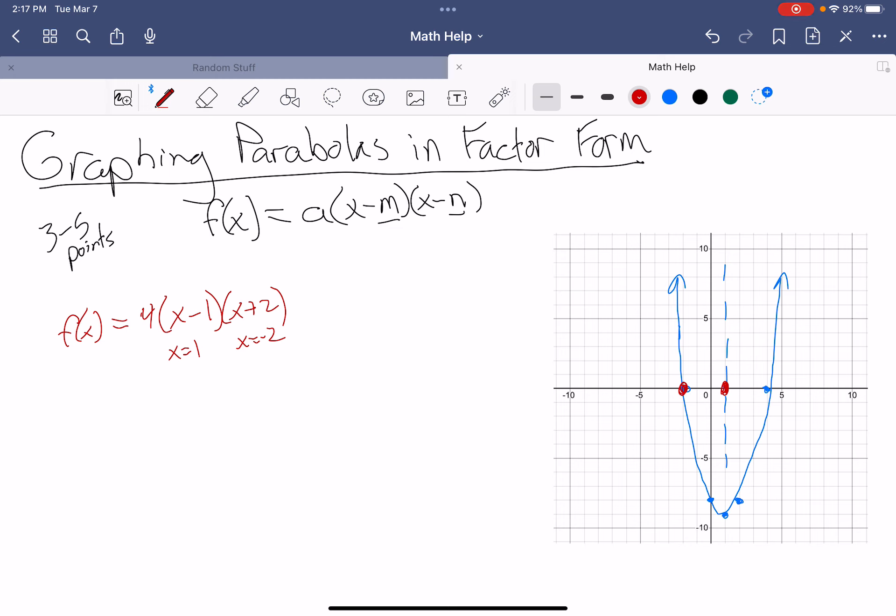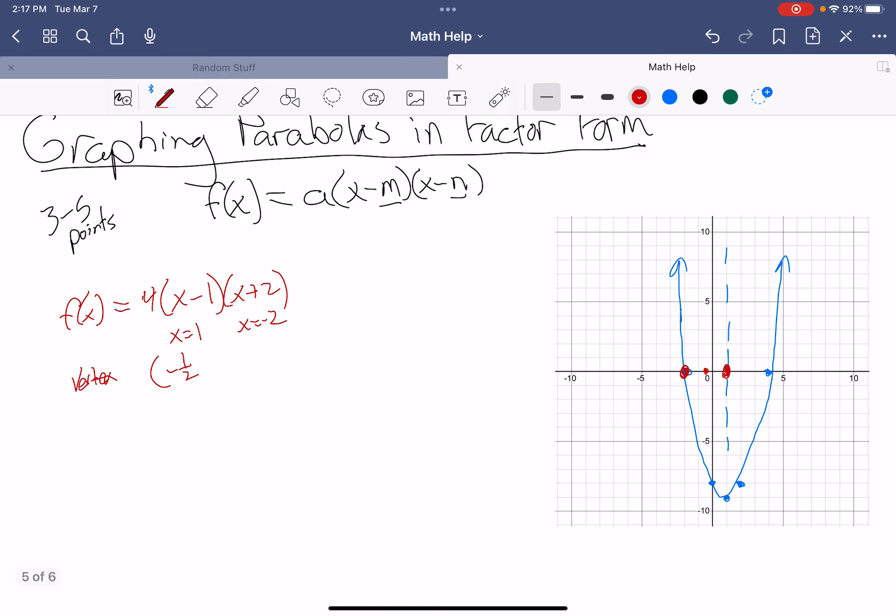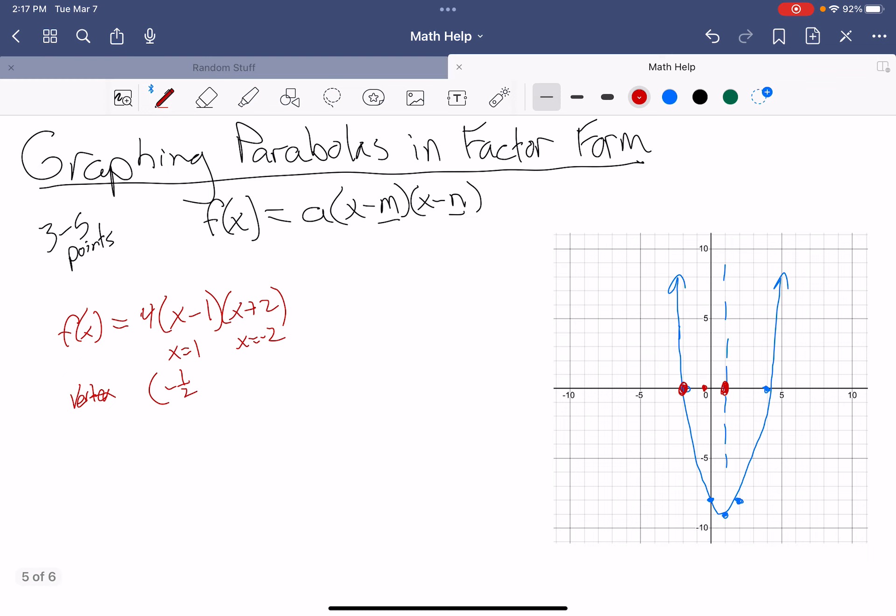With that, I can look at this and split the difference, which is going to be right here. For my vertex, I know the x-coordinate is negative 1 half. The way I did that is I looked at this and saw that this distance is 3. I just split it in half and found the halfway point, which is negative 1 half.